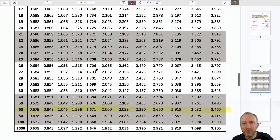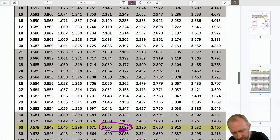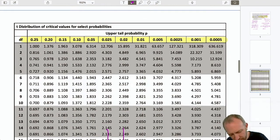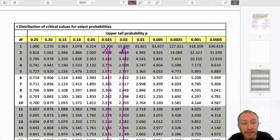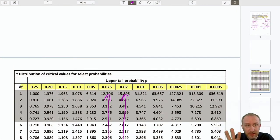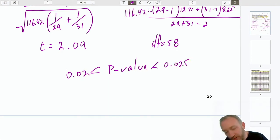My test statistic was 2.09. 2.09 is between these two. Very close to this one, but not quite. It's just between those two values. And, so I come up here. And, that gives me my relevant probabilities for my test. So, this is a one-tail test. So, I don't need to multiply anything by 2. So, here I have that my p-value is less than 0.025 and greater than 0.02.